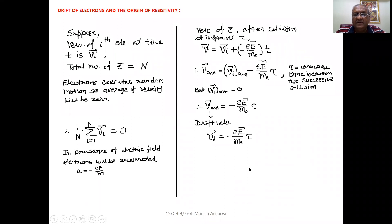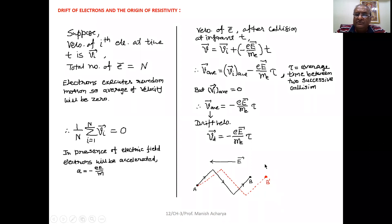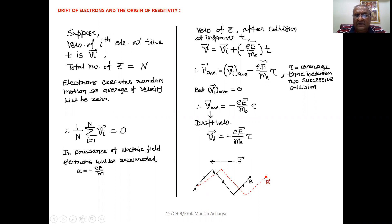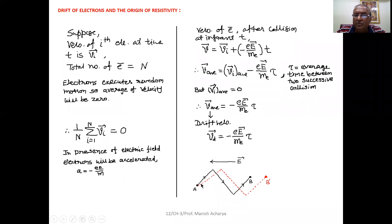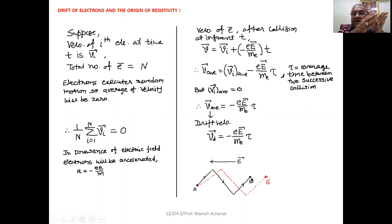Now let's think about the physical picture. See this figure. Suppose initially the electric field is not present, and the path of one electron is represented from A to B. But when the electric field is present, in the opposite direction of the electric field the electron will experience a force. Under the effect of this force, the path of the electron becomes A to B-dash, as represented by the red dotted line. This implies that due to the presence of the electric field, the electron is drifted or dragged from B to B-dash.